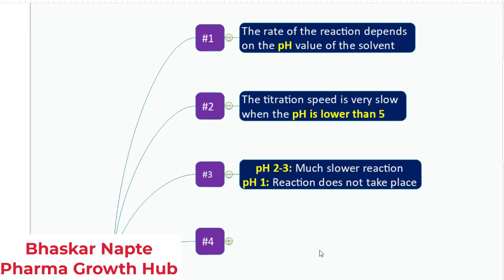If your solution is too acidic, like between pH 2 to 3, the reaction rate becomes much, much lower. And if it is 1 or less than that, the reaction will not take place at all. So you must make sure what is the pH of your solution or whether your sample is acidic in nature.